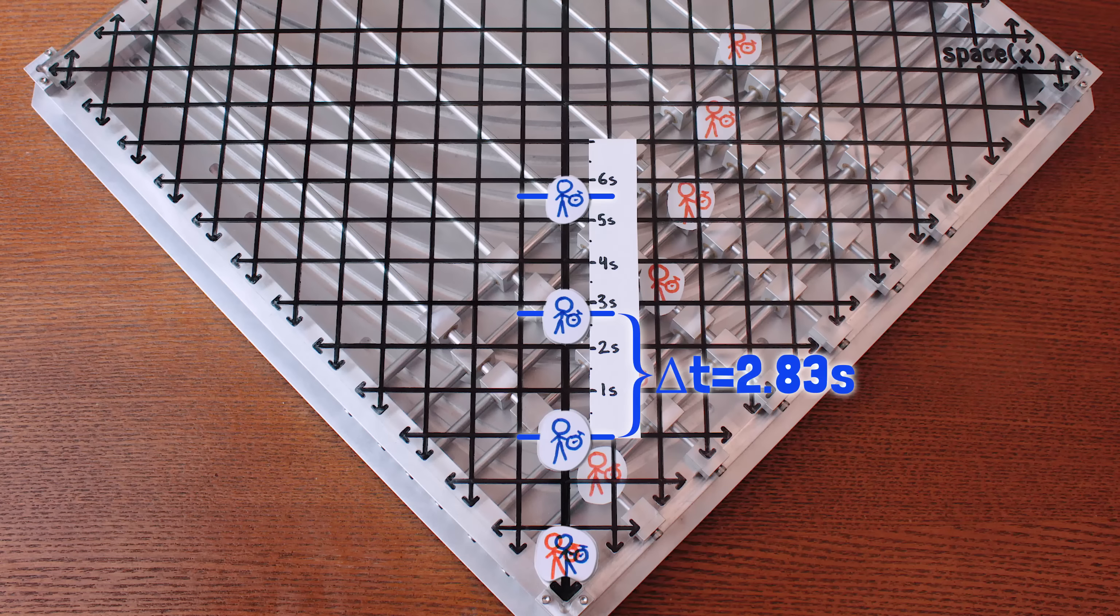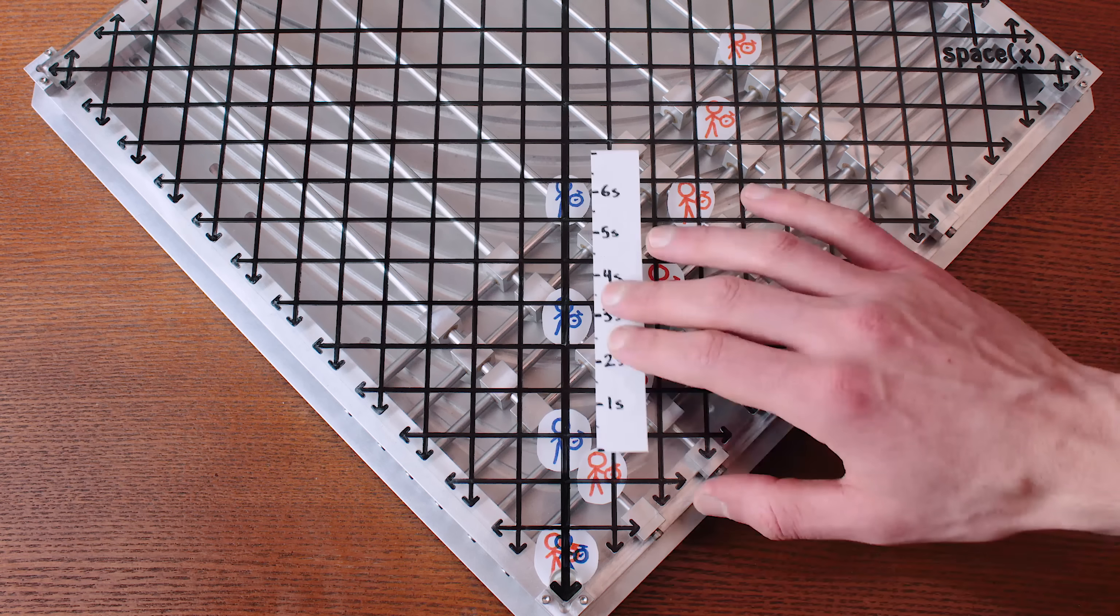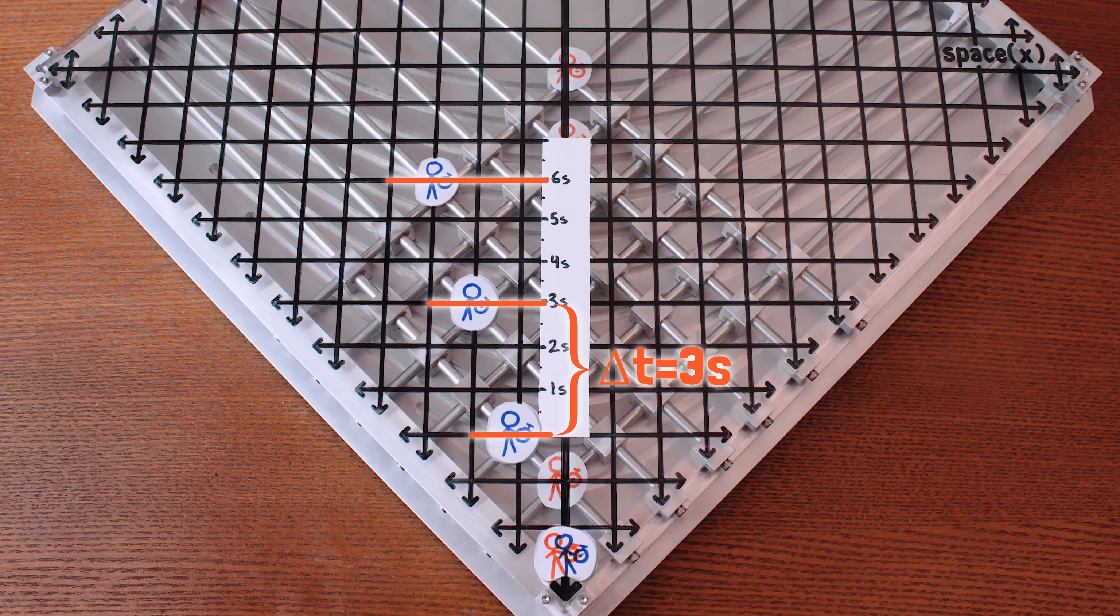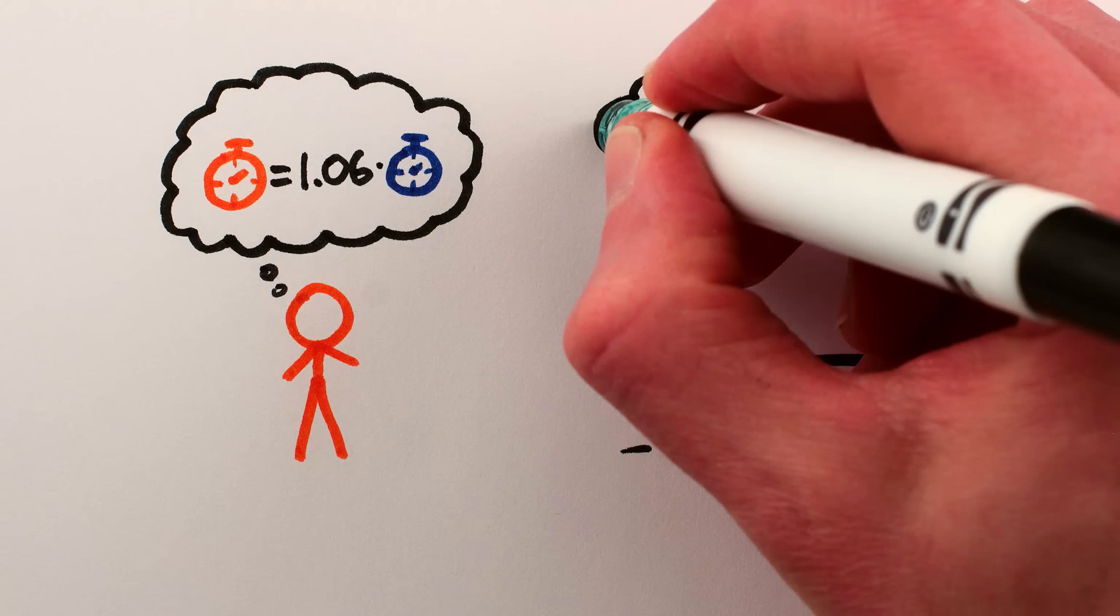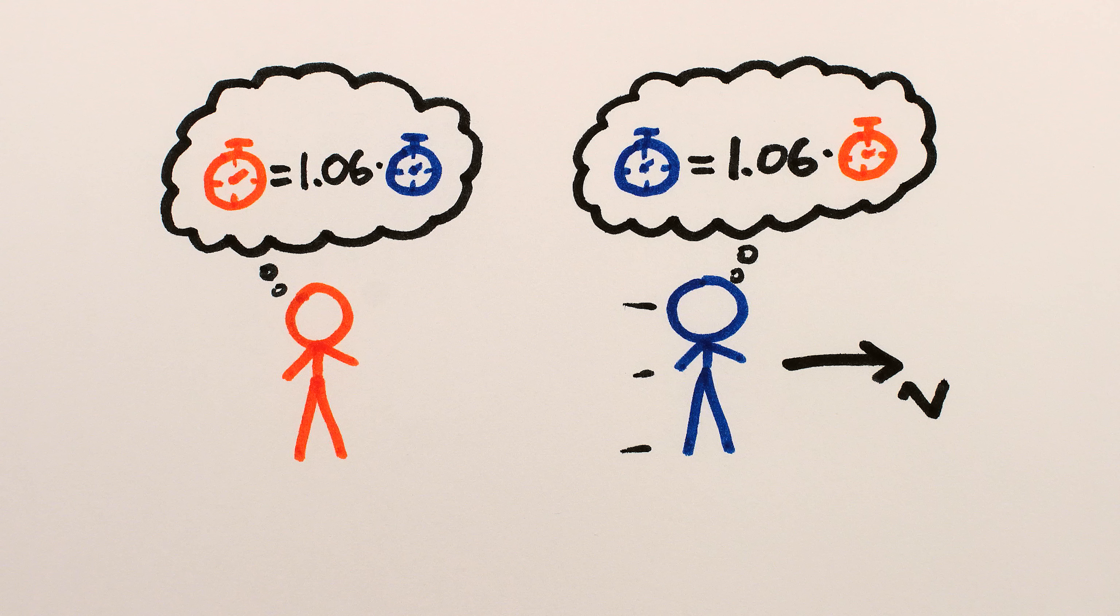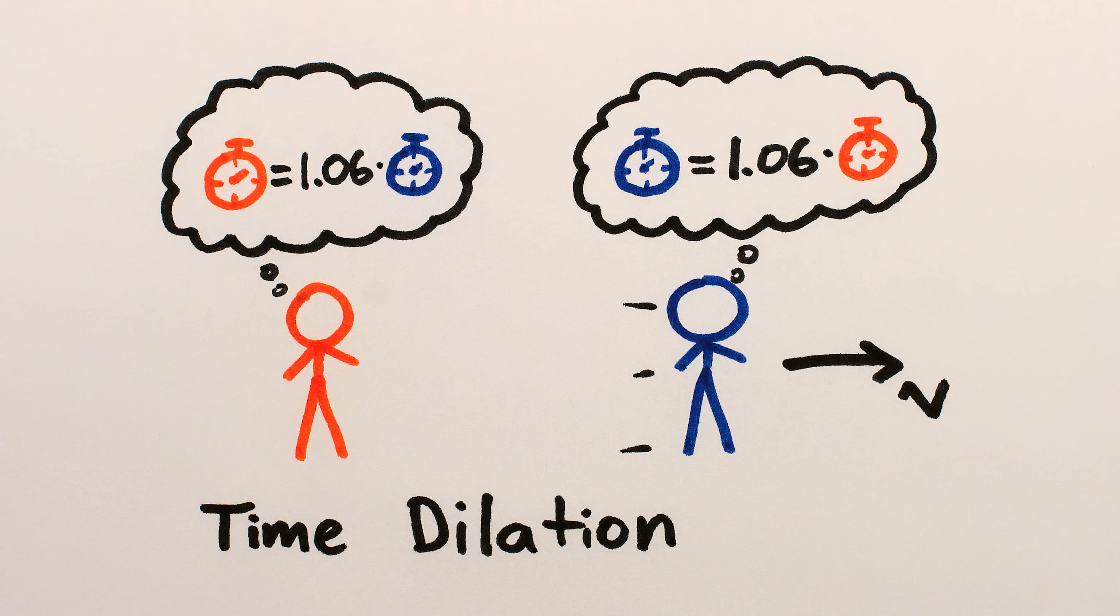Likewise, if you have a clock with you that ticks every 2.83 seconds, then from my perspective it will tick every 3 seconds. So both of us perceive each other's perception of time as running slow by the same factor. That is, relative motion causes our perception of the duration of time between events to become longer, or dilated. Time dilation.